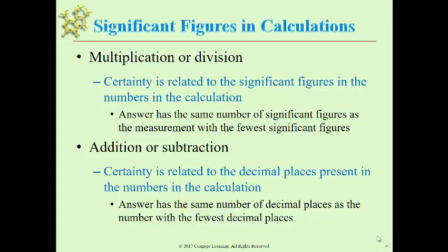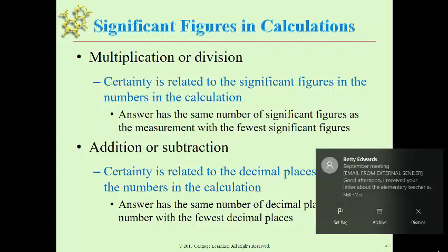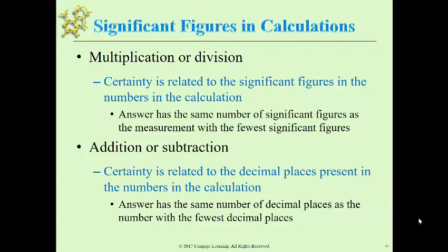However, in addition and subtraction, we're looking at decimal places. In addition and subtraction, the measurement with the least number of decimal places determines the decimal places in the answer. So sometimes these two are mixed together, and so you would apply them consecutively, depending on the order of operations, and then keep track as you go along which one of these rules you would use. So we'll go through some examples.